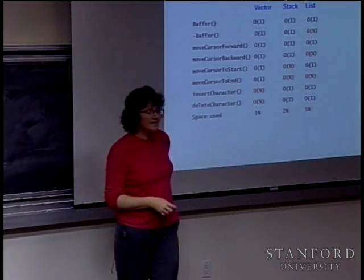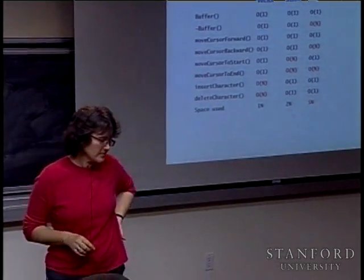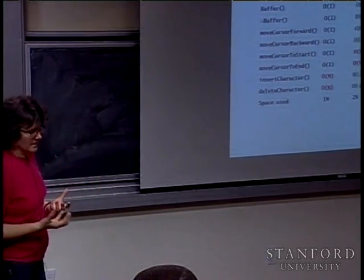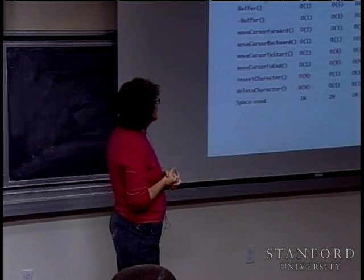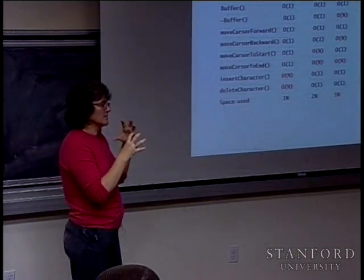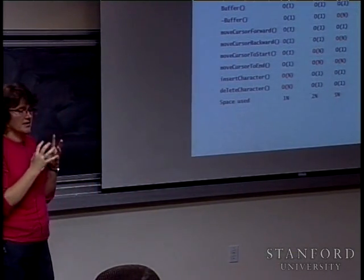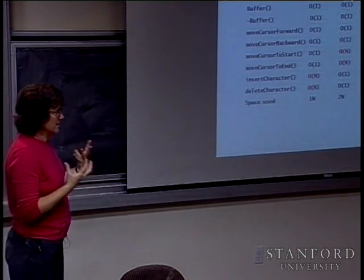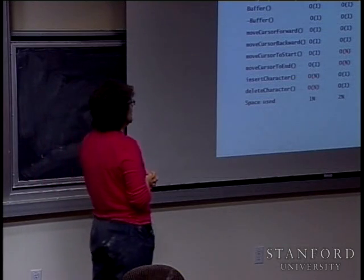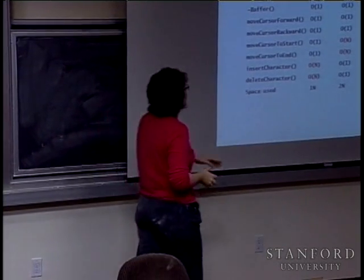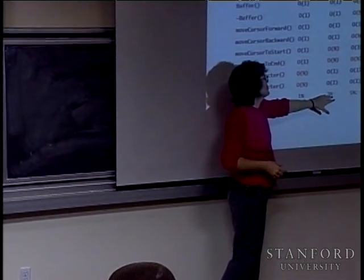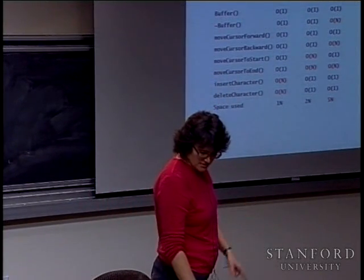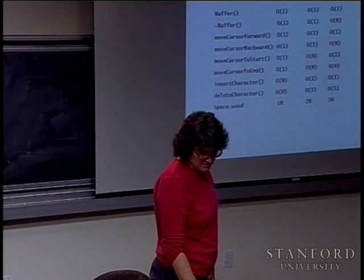The linked list also has a space cost. If a character is one byte and a pointer is four bytes, each linked list cell costs five bytes per character — five times the storage of the character alone. Compared to the vector, which was fairly tight, and even the stack, we've blown up storage by another factor of two, which is not a good direction.